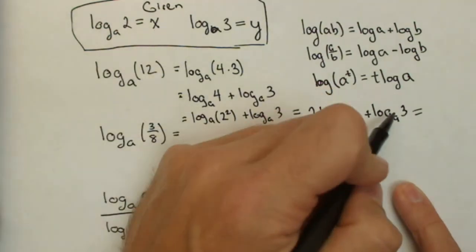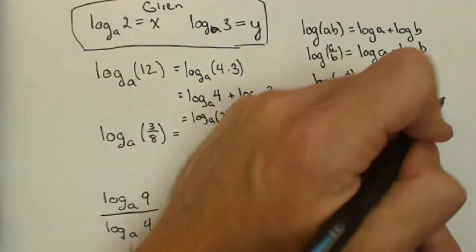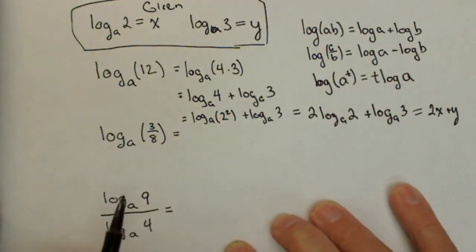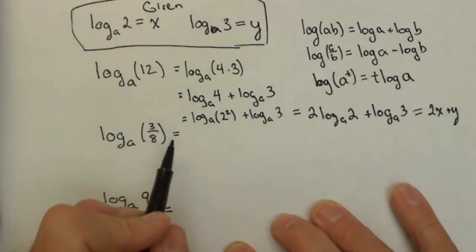And log base a of 2 is equal to x plus log base a of 3 is equal to y, so this could simplify to 2x plus y. So that's how we're looking to employ the properties here.